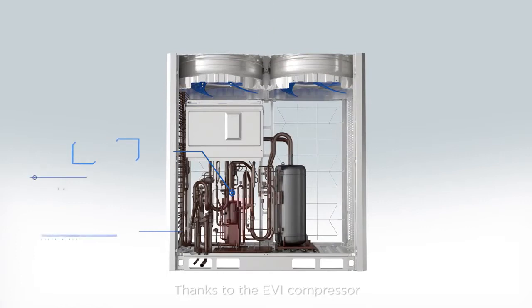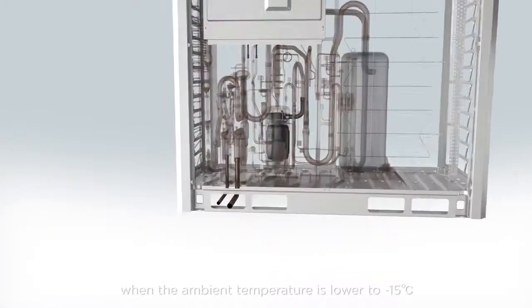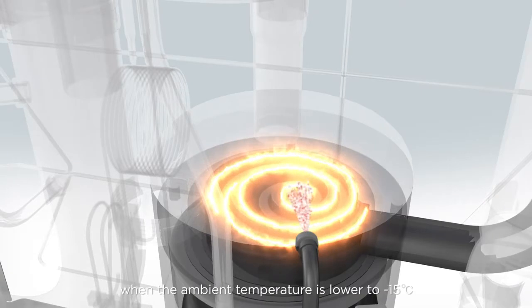Thanks to the EVI compressor, TrainTVR 6G can improve heating capacity by 20% when the ambient temperature is lower to minus 15 degrees Celsius.